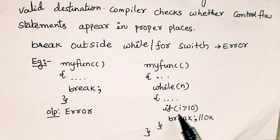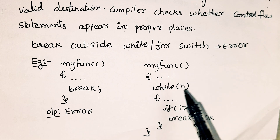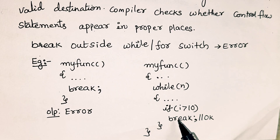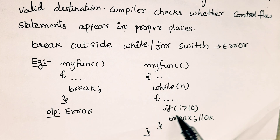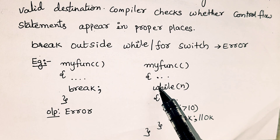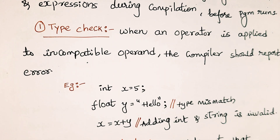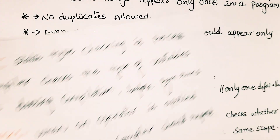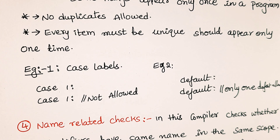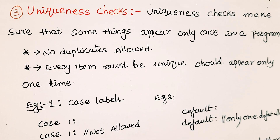As a valid example: writing break inside a while-if block is acceptable, because break is inside a control statement. This correctly passes the flow of control check.